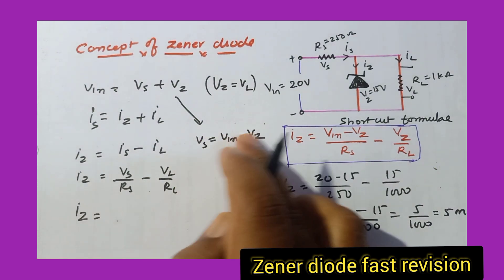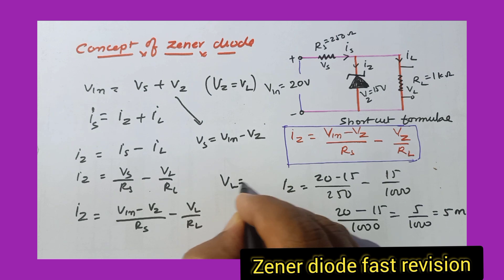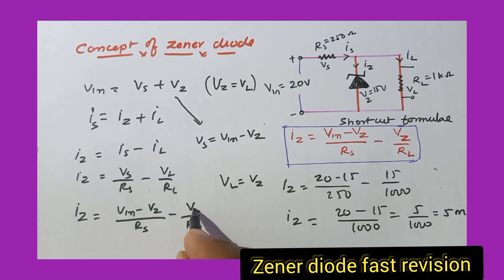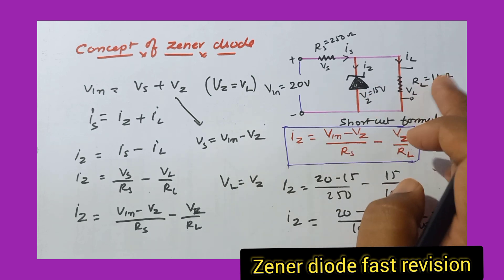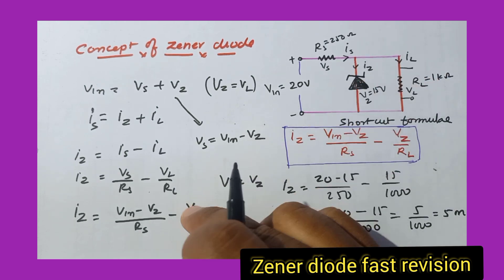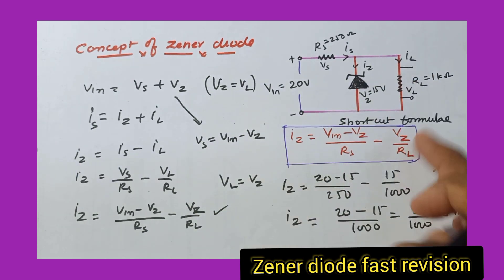Therefore, Zener diode current can be taken as Iz = (Vin minus Vz) by Rs minus Vl by Rl. You all know that Vl is equal to Vz. So we can replace Vl with Vz here because Vz is given. Sometimes he will not give Vz. He will give you voltage across the load resistance directly. Instead of Vz, we can also take Vl, doesn't matter. So this is the magical formula with which you can solve this problem very easily.